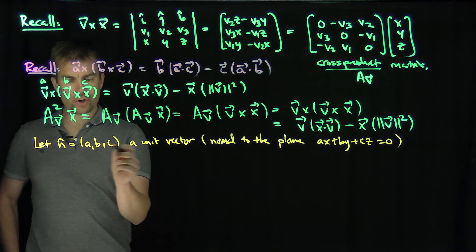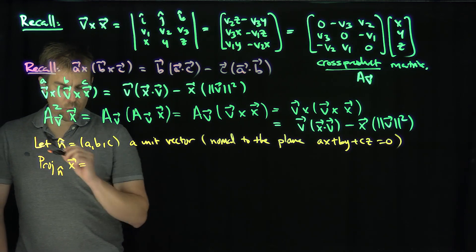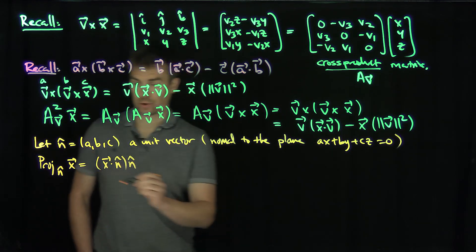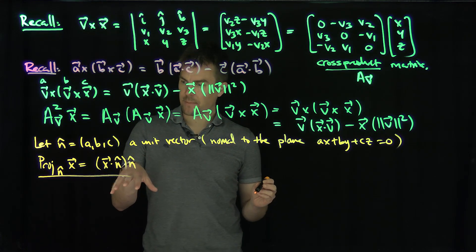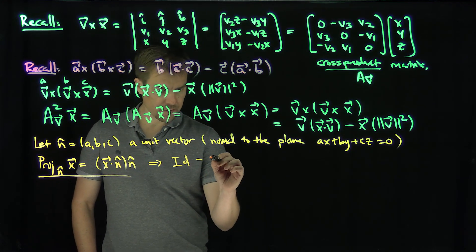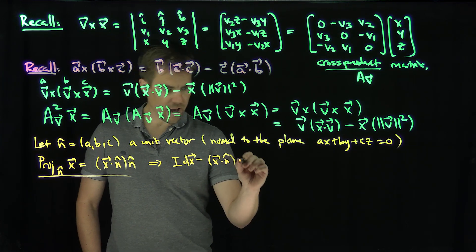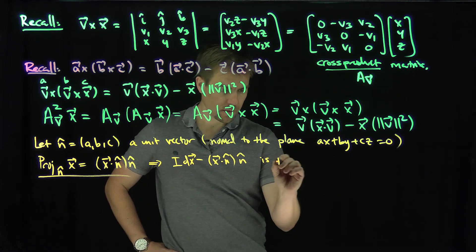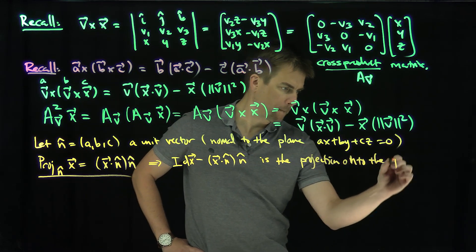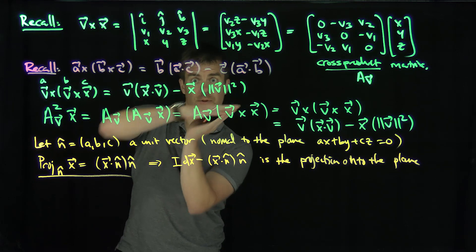Now, if you want to project onto this vector — the projection of a vector x onto n — that's just going to be (x dot n̂) n̂. That's our formula for orthogonal projection. And if I do identity minus projection, that gives me the projection onto the plane. In other words, identity minus the operator — identity applied to x minus (x dot n̂) n̂ — is the projection onto the plane.